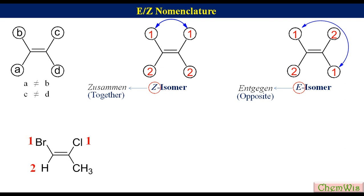Cl will be 1 and CH3 will be 2. Since higher priority groups are on the same side of the alkene, it would be Z-isomer. Let's have another example. In this, on the left carbon CH2Br is 1 and CH3 is 2.